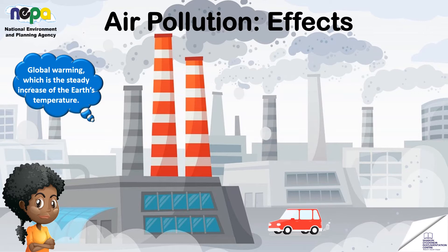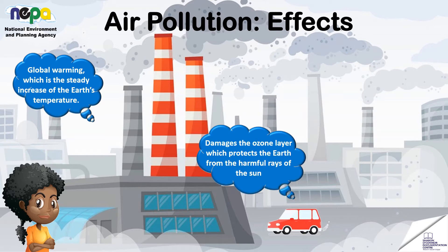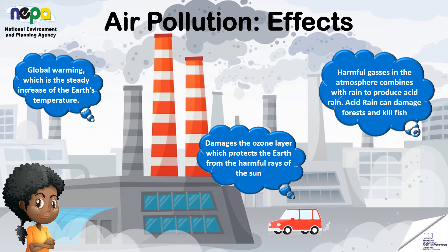Global warming, which is the steady increase of the earth's temperature, damages the ozone layer which protects the earth from the harmful rays of the sun. Harmful gases in the atmosphere combine with rain to produce acid rain, which can damage forests and kill fish.